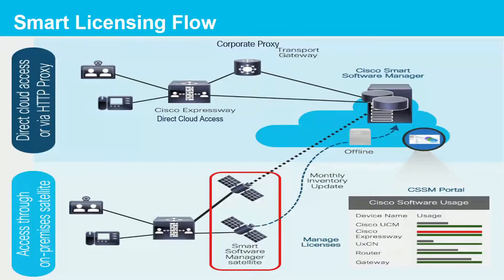Let's look at the smart licensing flow. There are two methods for smart licensing. Method 1: Direct Cloud Access or HTTP Proxy. Direct Cloud Access uses HTTPS to transfer license usage from the Expressway server over the internet to the CSSM cloud server. The Corporate HTTP Proxy option transfers license usage from the Expressway server over the internet to the CSSM cloud server through an HTTPS proxy such as Apache Mod Proxy or FreeBSD Squid.